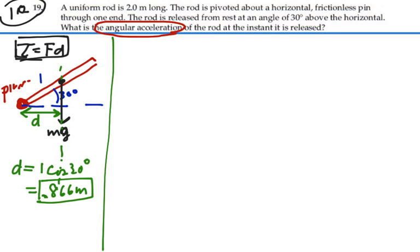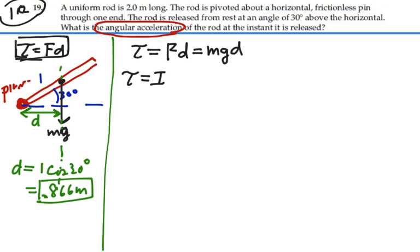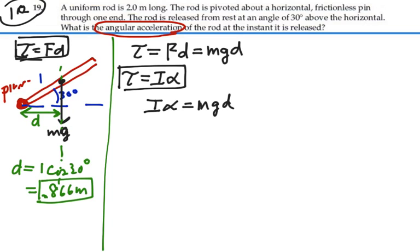So the torque due to gravity is equal to the force times the moment arm, which equals mg times D. If that is the net torque, then it's the only torque responsible. The net torque equals the moment of inertia of the body times the angular acceleration. Setting these equal, we have I times α equals mgD, or the angular acceleration equals mgD divided by the moment of inertia.